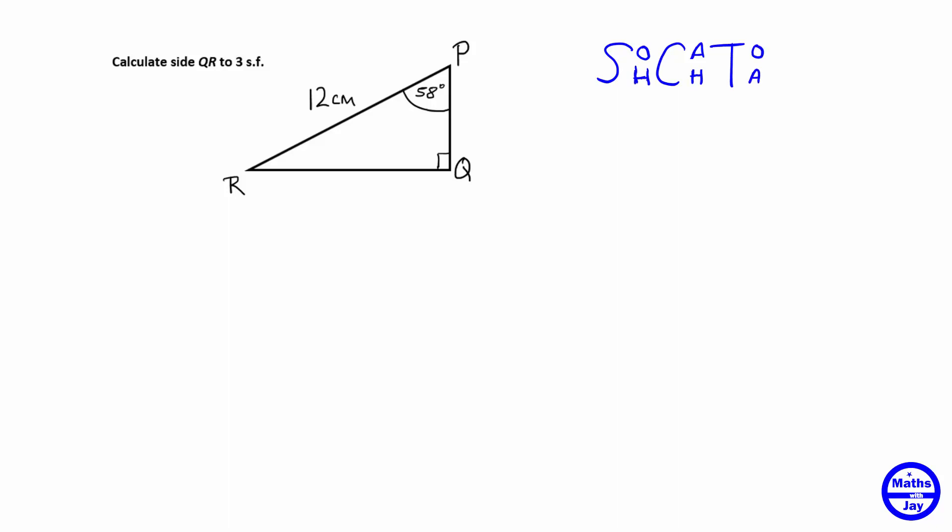And now we look at the triangle and it's always best to label the longest side first that's the side opposite the right angle so that's going to be the side that's not touching the right angle so that's the side of 12 centimetres so that's our hypotenuse. And the other side involved here is the side that we want to find so that's side QR so that's the opposite side because it's opposite the angle that we've been given the angle of 58.